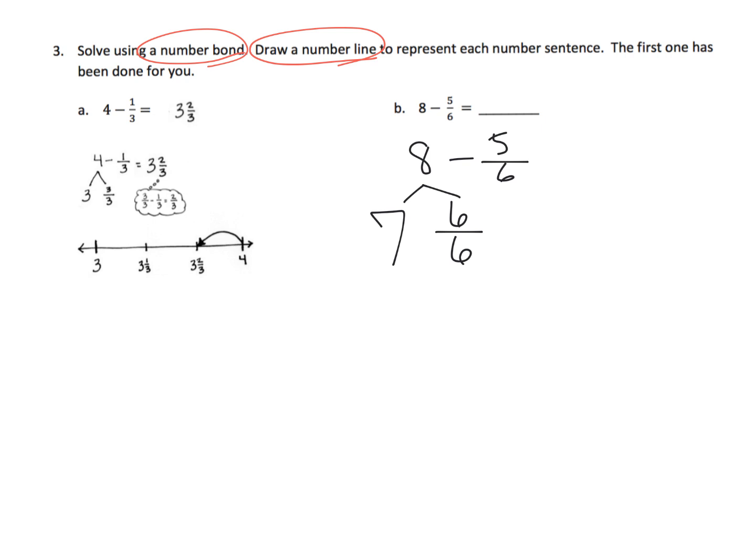And now when we take that 6 sixths and subtract 5 sixths, we're going to end up with 1 sixth plus the 7 that we have right here. And that is our final answer, which is 7 and 1 sixth. And how did we get that? Well we added the 7 plus the 1 sixth.